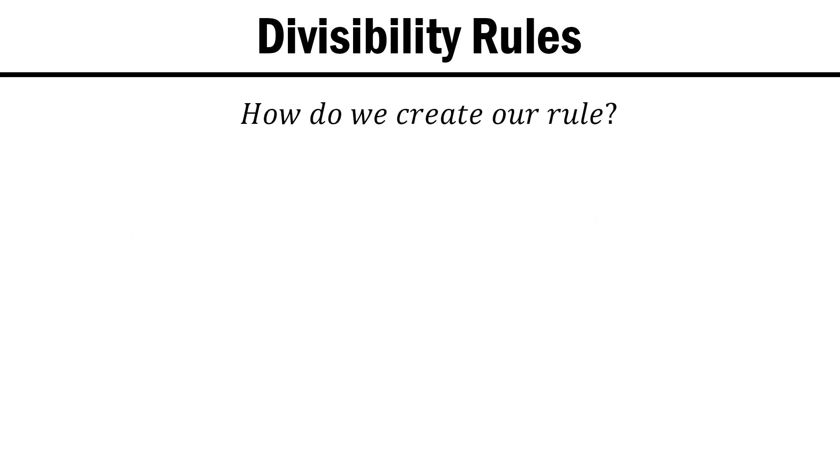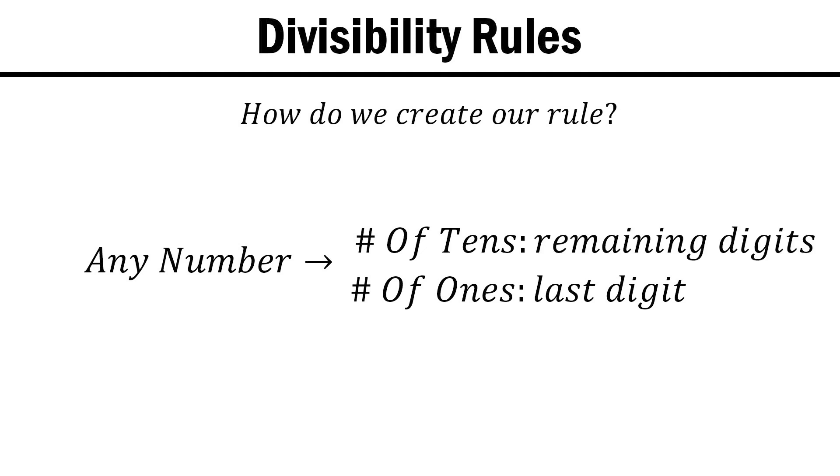To find our first rule, we want to be able to split any number into the number of tens it contains and the number of ones. The number of ones is easy, that's just the last digit. We can see, using 154 as an example, that the number of tens is just the remaining digits.